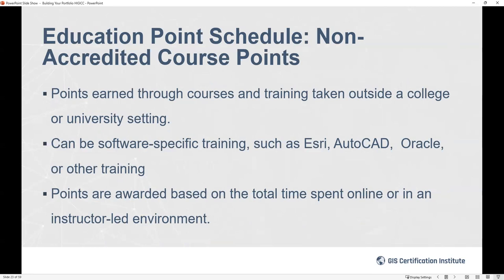The third category is non-accredited course points — educational opportunities taken outside a university or college setting. Great examples include software-based training such as Esri classes, AutoCAD, Oracle, or specific training provided by a third party. Many folks are also taking MOOCs — massive online courses. Points are based on total time spent in the course, including both formal online course time and additional time spent with the course materials, calculated the same way as accredited courses but in a different category.